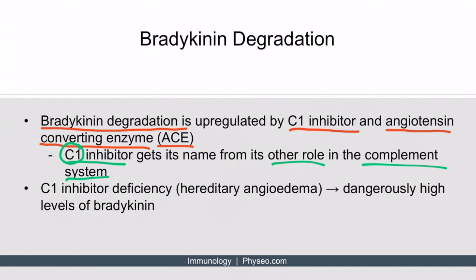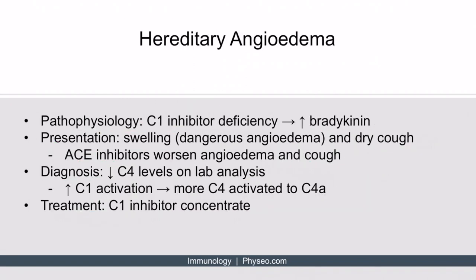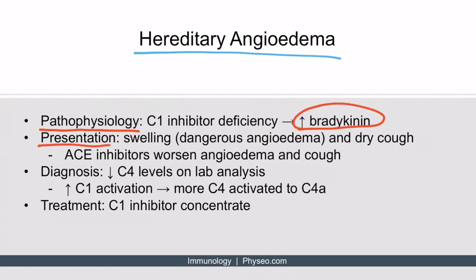Here's how C1 inhibitor becomes clinically relevant. If there's a C1 inhibitor deficiency — a condition also known as hereditary angioedema — then the patient can have dangerously high levels of bradykinin. Regarding pathophysiology, a C1 inhibitor deficiency leads to increased levels of bradykinin. This presents as swelling, which can lead to dangerous angioedema, and when levels are really high it can also cause a dry cough from smooth muscle constriction of the bronchi.